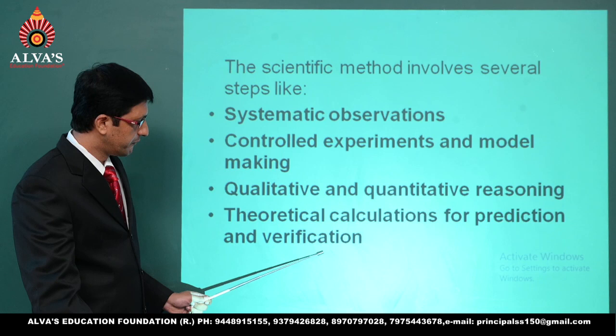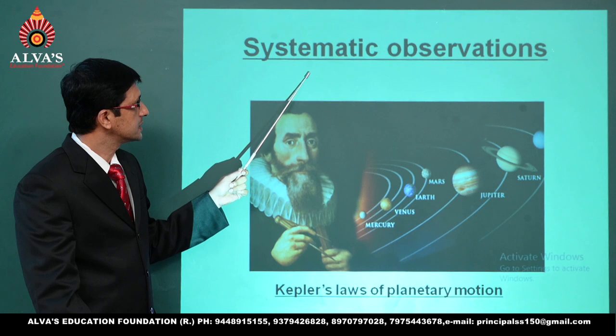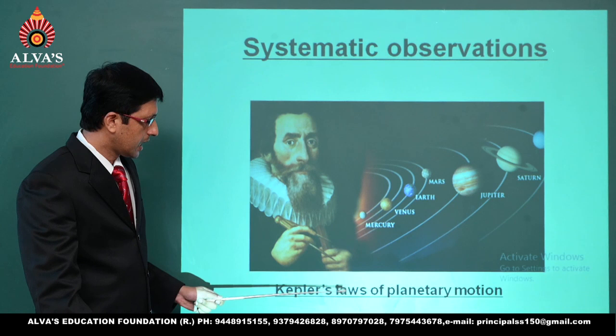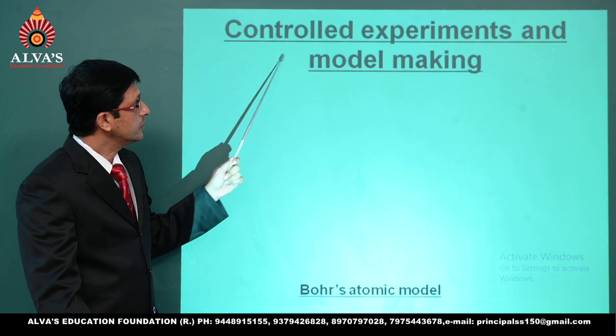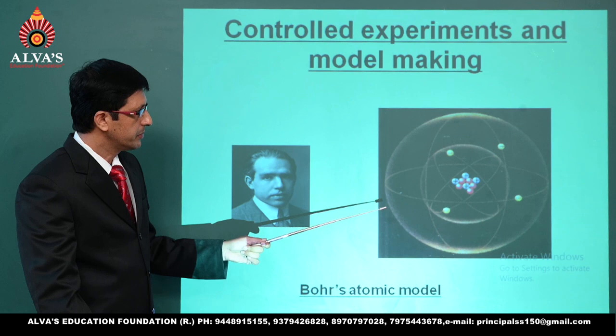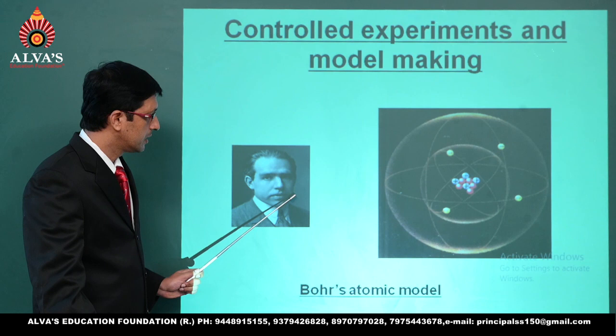The first process, systematic observations, has an example in the laws of planetary motion given by Kepler. The second step, controlled experiments and model making, has an example in the atomic model given by Niels Bohr.